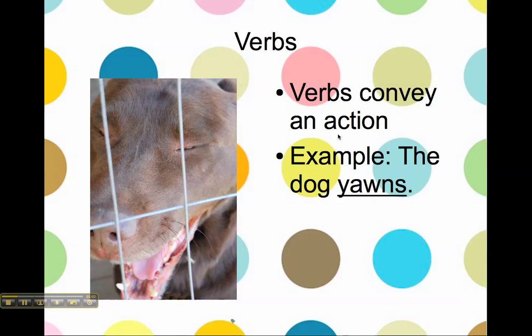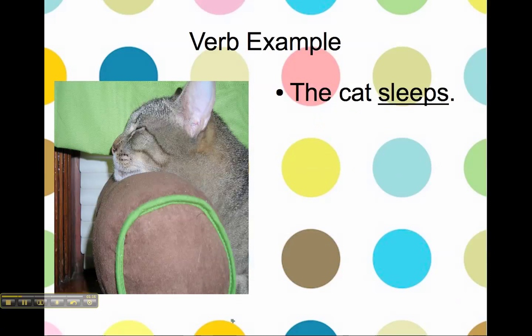And then we have verbs. Verbs convey an action. I have a picture here of a dog — his name's Legolas — and he's yawning. So the sentence I have is: the dog yawns. Yawning is the action that the dog is doing, and so that's our verb. I also have this picture of my cat who's asleep, and so the sentence is: the cat sleeps. The action that the cat is doing is sleeping.